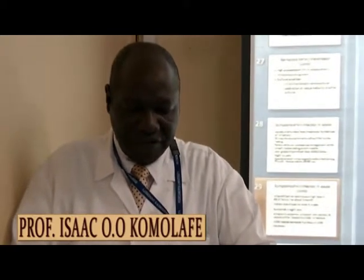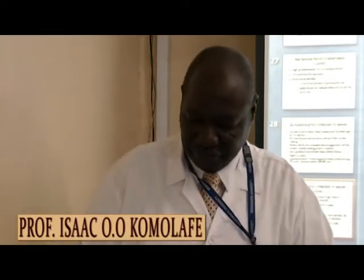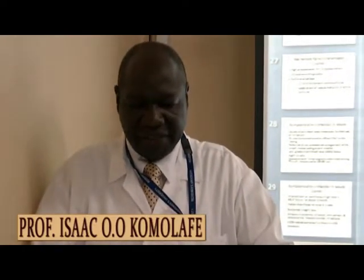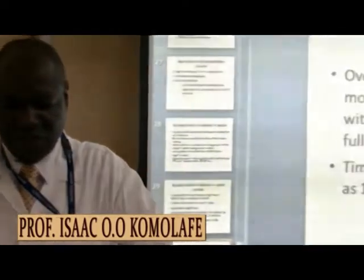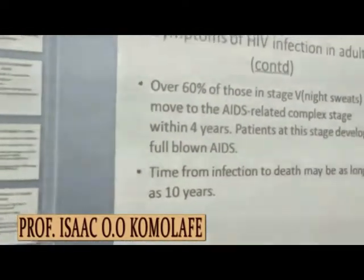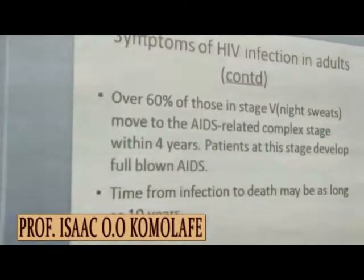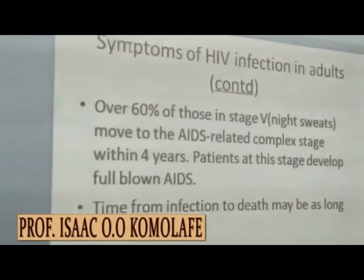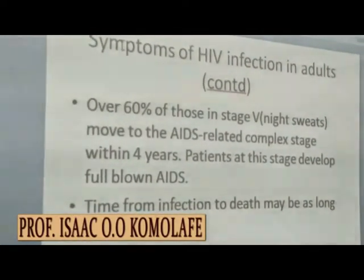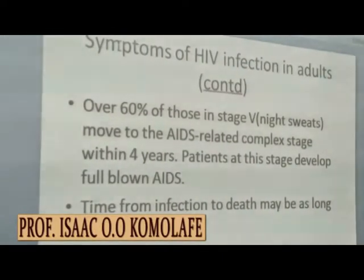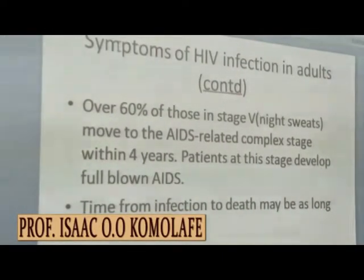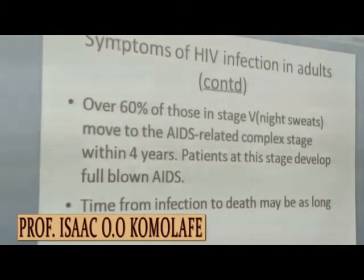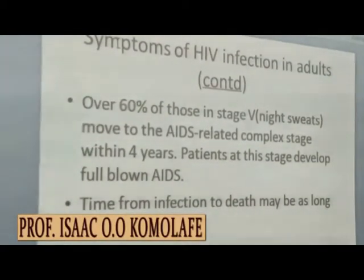Then there could be the final stage — the full blown AIDS — which will develop. Over 60% of those in stage five, that is those who experience night sweats, move to the AIDS-related complex stage within four years, and patients at this stage develop full blown AIDS. Time from infection to death may be as long as 10 years.